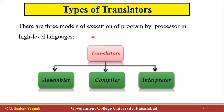A simplified translation process is given here. Translators can be categorized into three types: assemblers, compilers, and interpreters. First of all, we will learn about each of these three types.